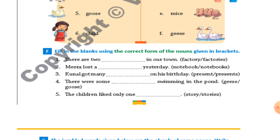Third one: 'Kunal got many ___.' 'Many' means more than one, so the answer is 'presents'. Fourth one: 'There were some ___ swimming in the pond.' There were some — so the answer is 'geese'.